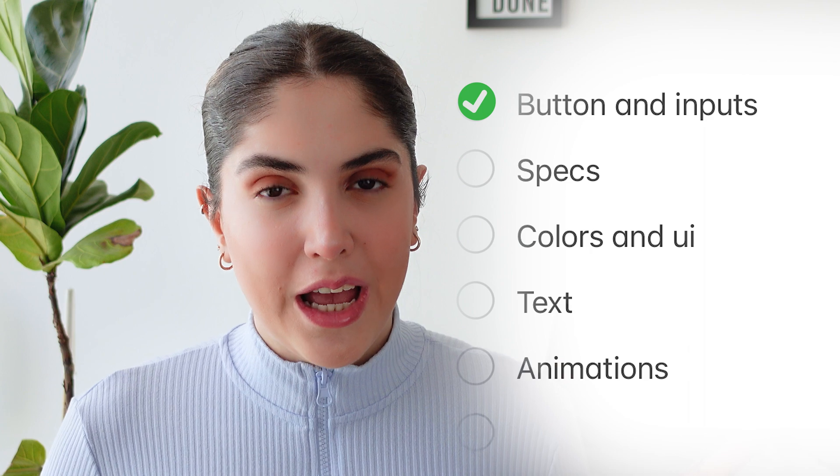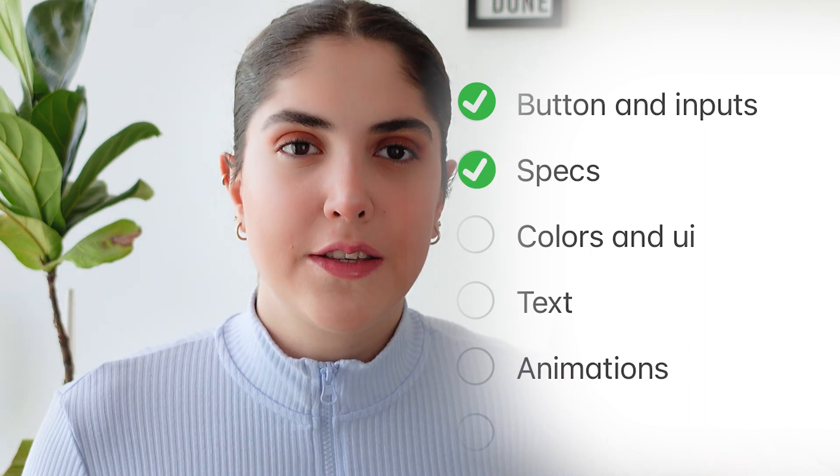The second thing on this checklist is specs. You want to make sure everything is within spec — that lines are in the right position, that the spacing between two components is right, and that sizes are correct. You basically want to take a screenshot of the developed page, put it on the design page, turn the opacity down, and see what's not in the right place or not in the right specs. It's super easy and it helps your design look more like what you originally had in mind.